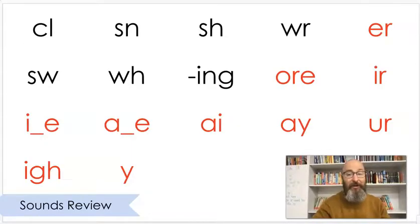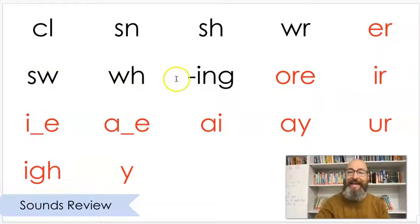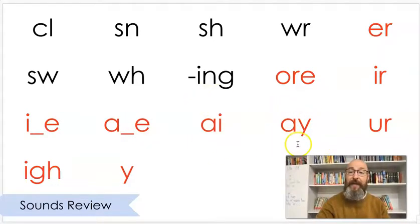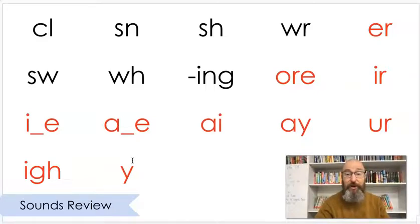Let's go over some sounds that we've already learned before this year. Let's say these with me, please: UR, SW, W, ING, OR, UR, I, A, A, A, UR, I, I. And if you want to pause the video right now and think of some words that have some of these patterns in them, feel free to do so, or continue to join me and let's practice some words with those sounds.